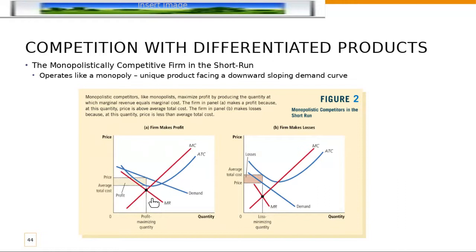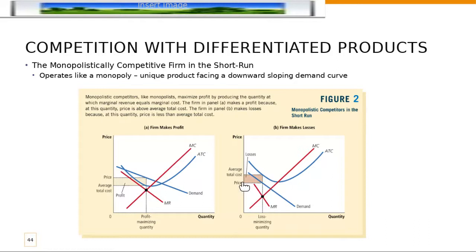Just as a reminder, the steps are: first, identify the profit-maximizing quantity where marginal cost equals marginal revenue. Second, trace up at this quantity and find where it intersects the demand curve — that tells you the price the firm will charge. Finally, find the average total cost at this quantity to determine the cost for the firm. This doesn't always mean a monopolistically competitive firm makes a profit — average total cost could be higher than the demand curve price, resulting in a negative economic loss. The area of that rectangle is calculated as price minus average total cost times quantity.